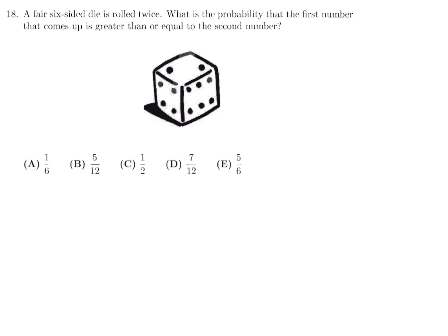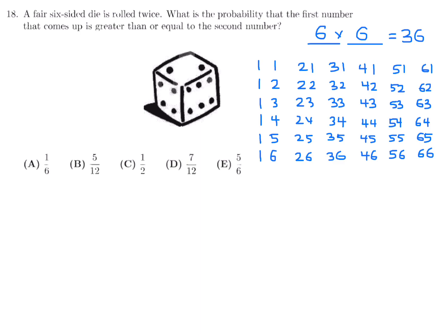Number 18: A fair six-sided die is rolled twice. What is the probability that the first number is greater than or equal to the second? There are 6×6 = 36 total equally likely outcomes, and we can list them all.